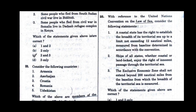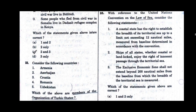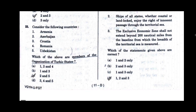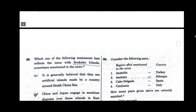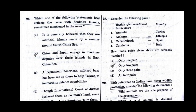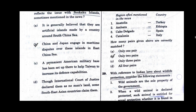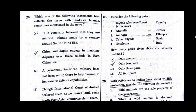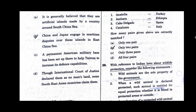Question number 25. With reference to the United Nations Convention on the Law of the Sea, consider the following statements. Which of the statements given above are correct? Option D will be the correct answer: 1, 2 and 3. Question number 26. Which one of the following statements best reflects the issue with Senkaku Islands sometimes mentioned in the news? Option B will be the correct answer: China and Japan engaged in maritime disputes over these islands in the East China Sea.